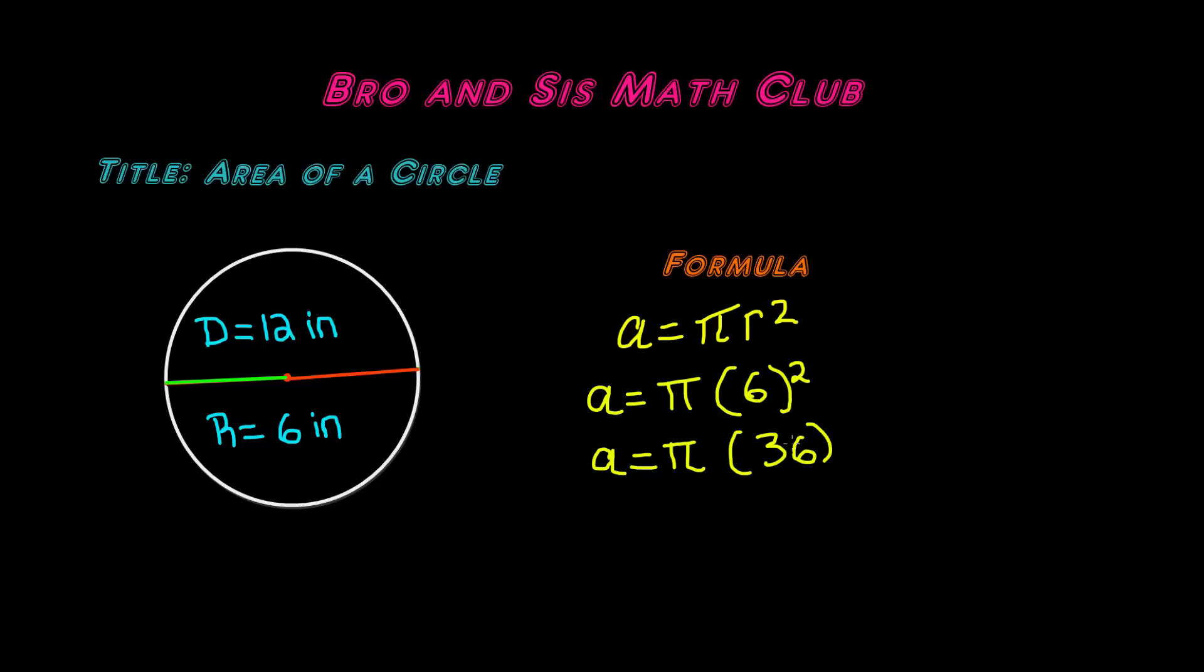Pi has an approximate value of 3.14, so we have to multiply 3.14 times 36. So let's go ahead and do the multiplication. 3.14 times 36.